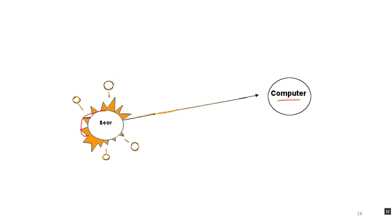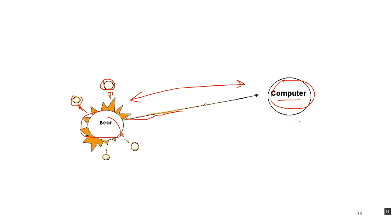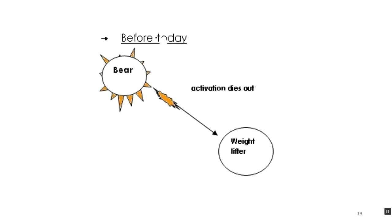When you're thinking about bears, you start to think about these big things that are brown or black, that have claws, and they kill people. But you don't think about computers when you think about bears, because activation dies out over distance in your mind. Bears and computers are two distant concepts. So if I say 'bear,' that will prime or activate claws and 'kills people,' but the activation starts and then dies out before it gets to computers. Activation dies out — so if I say 'bear' to you, you don't think about weightlifters.